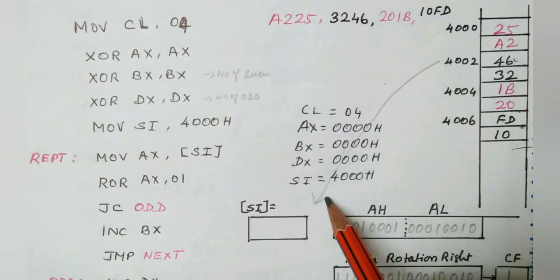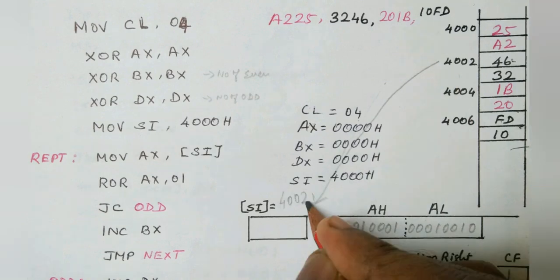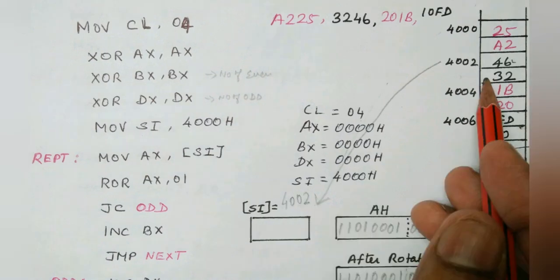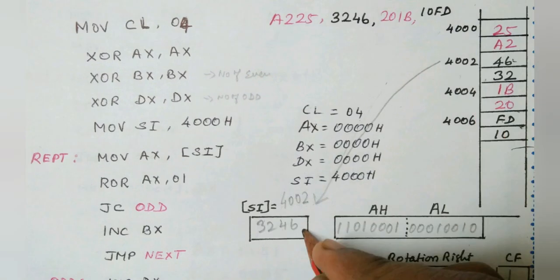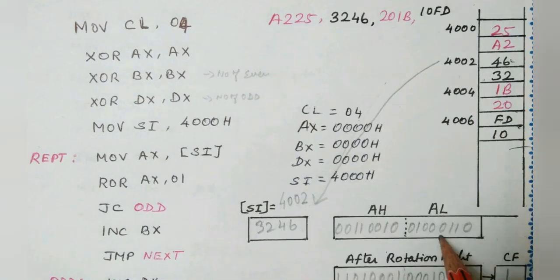The second thing is SI points to the 4002 location. There we have the value 3246. 32 is the higher byte, 46 is the lower byte. Now that is moved to the AH register. It is represented in binary form.